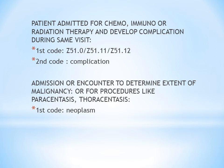The next guideline is admission or encounter to determine the extent of malignancy, or for procedures like paracentesis or thoracentesis. If the reason for admission is to determine how much the malignancy has spread, or for those procedures, your primary code should be the neoplasm itself. Even if chemotherapy is also performed in the same visit, your first code should still be the neoplasm code.